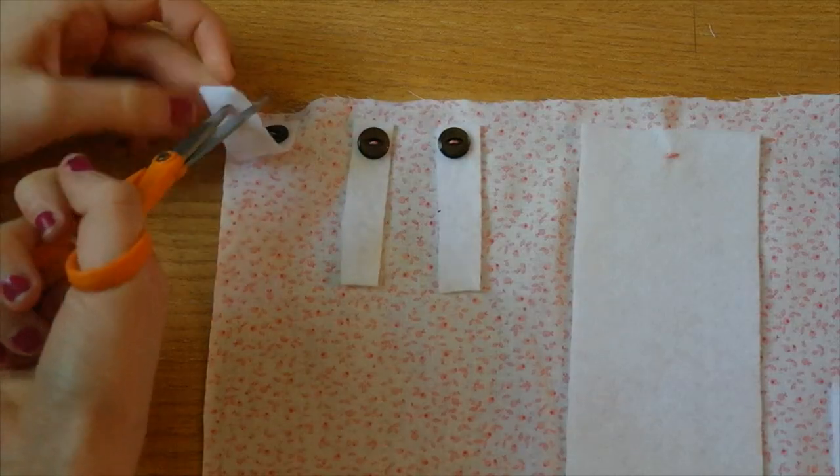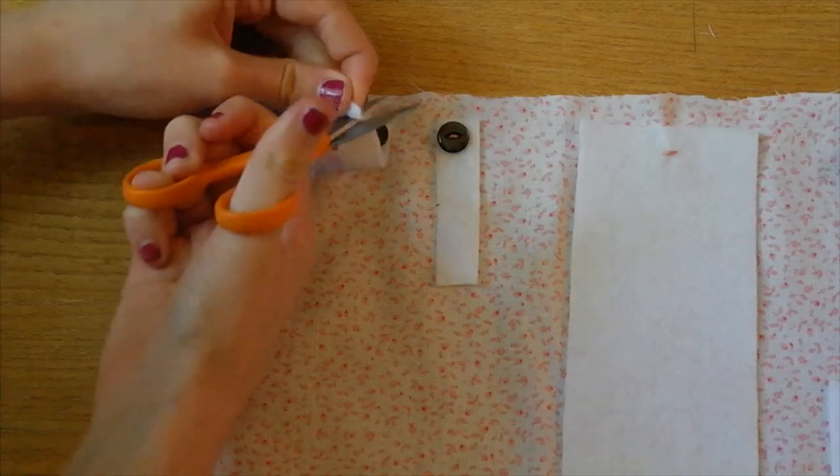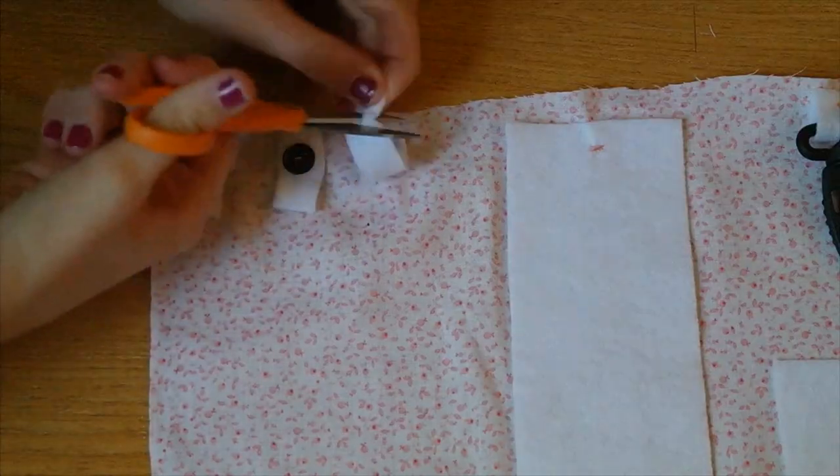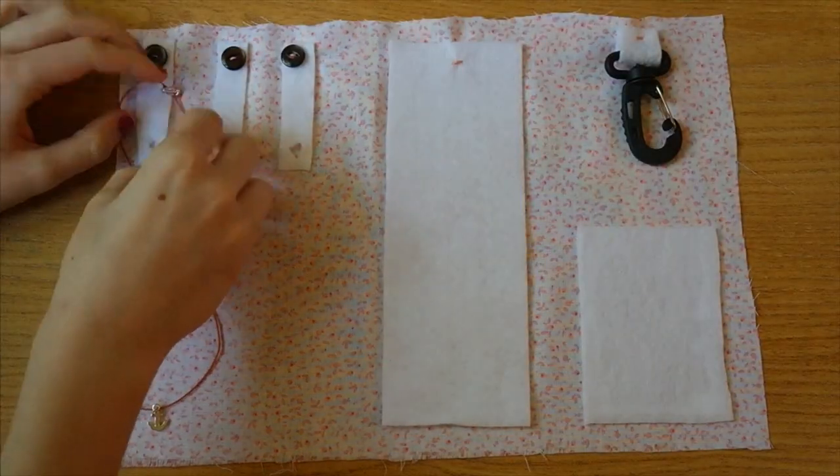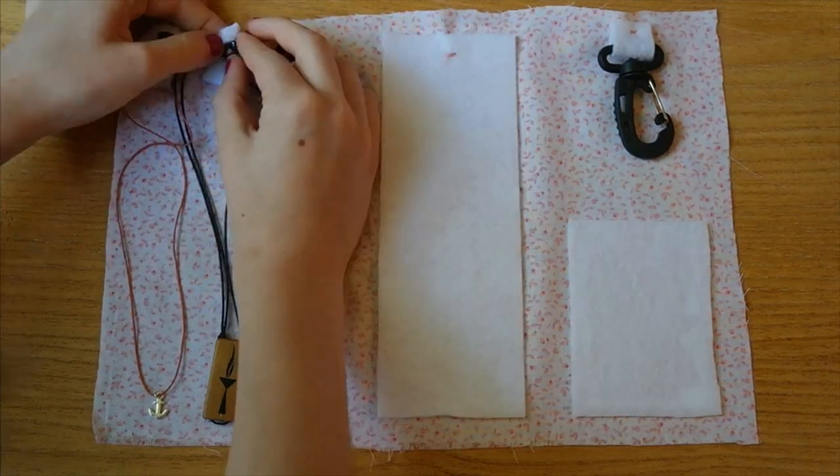Finally, for all the places that you put buttons on, you should cut a hole on the bottom of the fabric so you can put the button through the hole. Now you are finished. For the small pieces of fabric with buttons, I put my necklaces on.